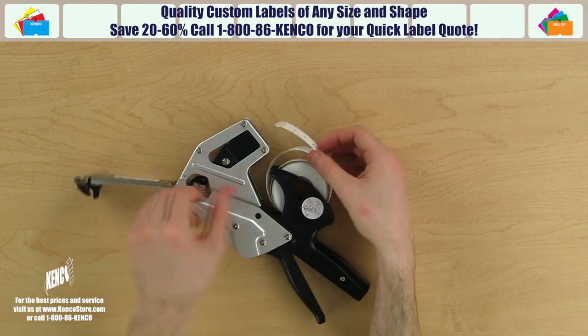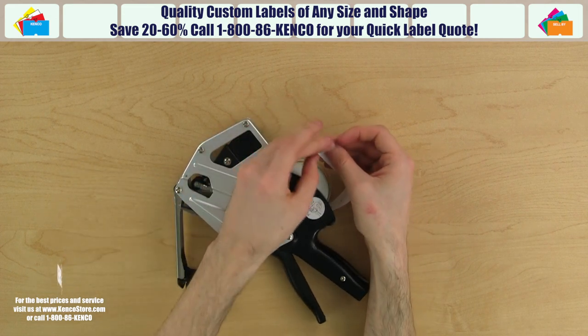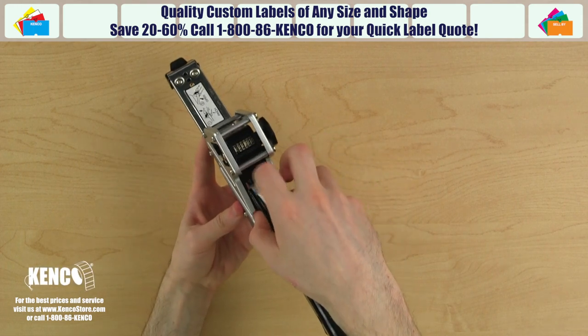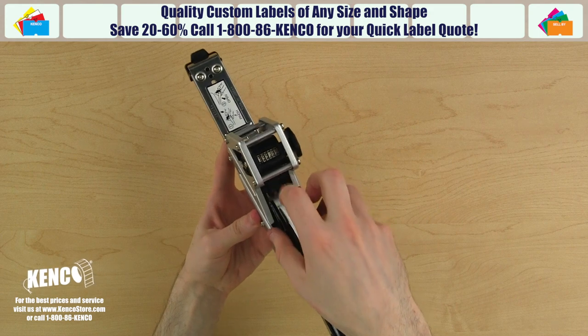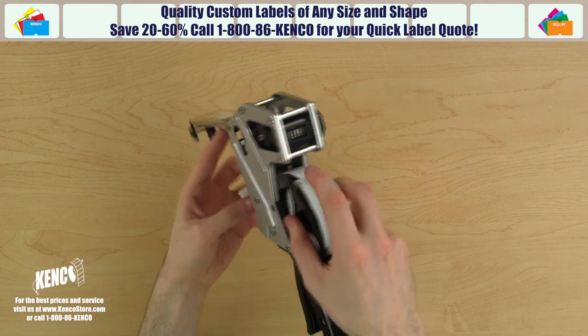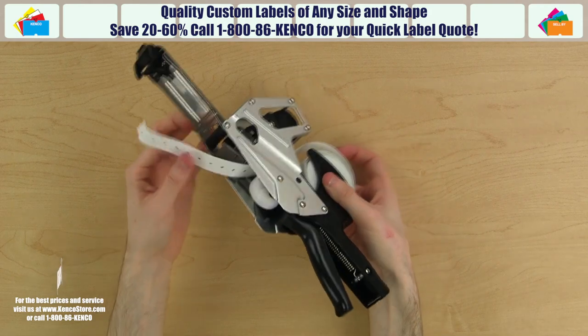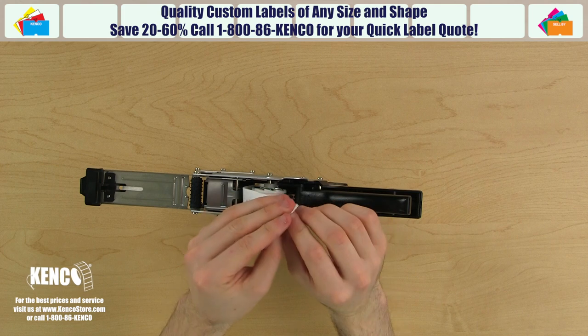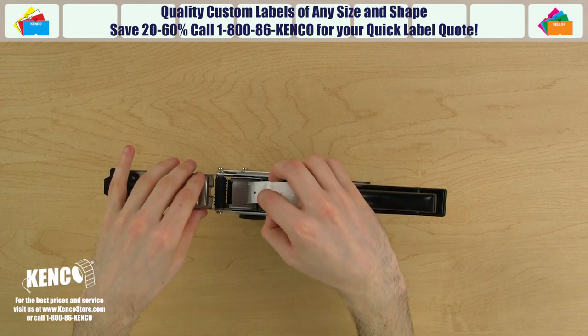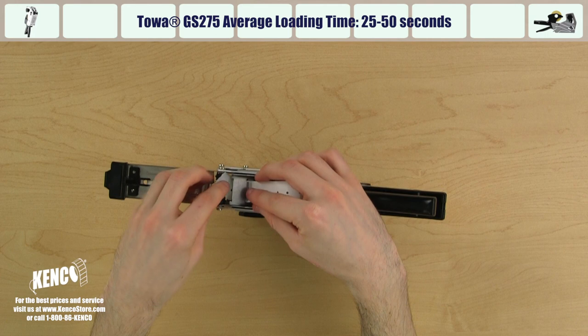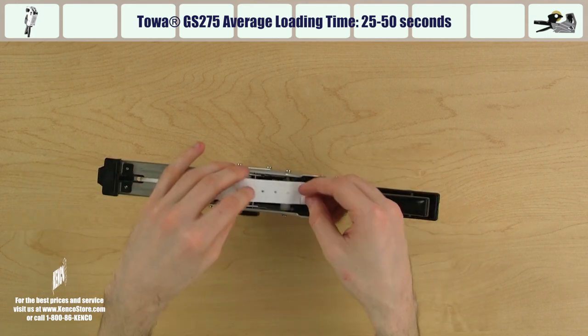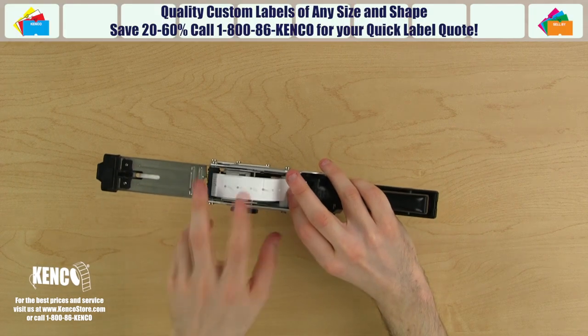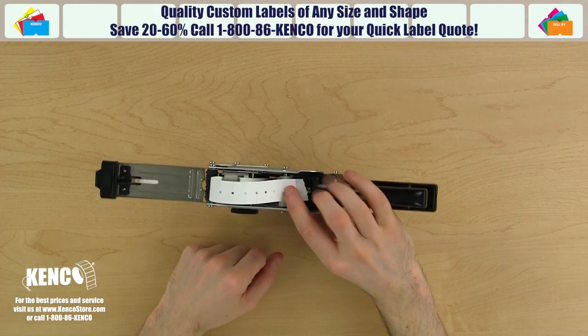To make the next step easier, let's bend that first label about 30 degrees away from the label lining. Now we can begin feeding the labels into the gun between the pressure plate and the advancing mechanism. Pull about 4-5 inches through for the next step. Now we'll need to feed the labels through the gap in the pressure plate. To make this a little easier, let's bend that first label inward towards the label lining. Once the labels are through the gap, pull them back down against the sprockets on the advancing mechanism. You'll want to be careful not to feed the labels around the pressure roller as this would cause the labels to jam.